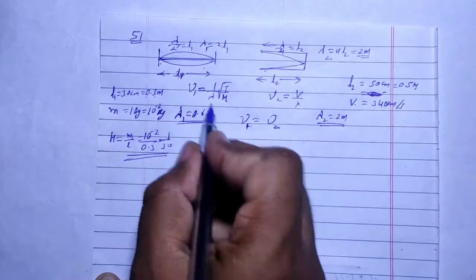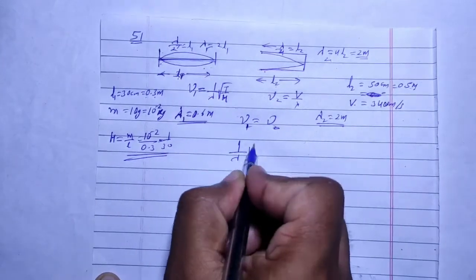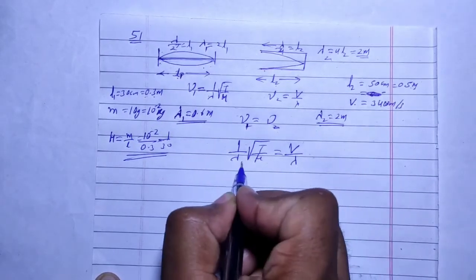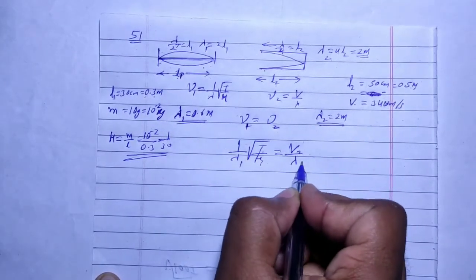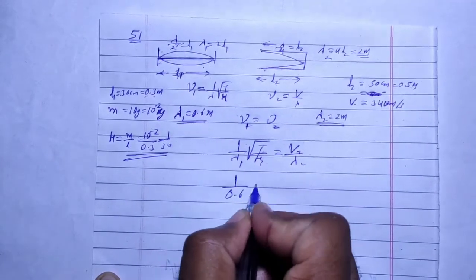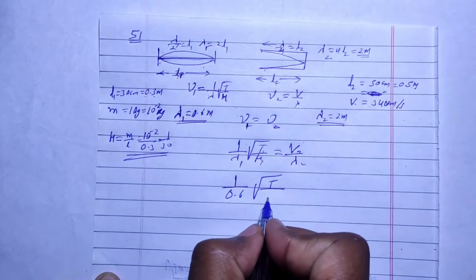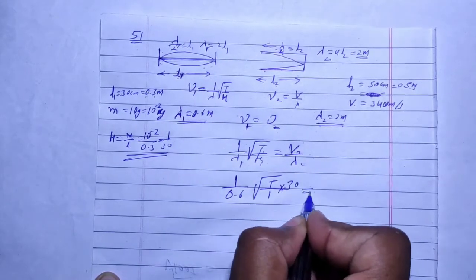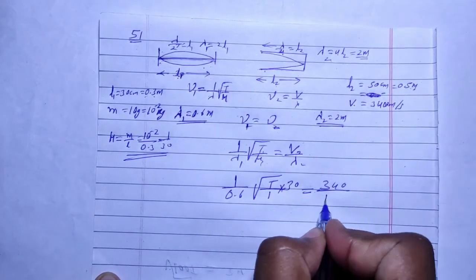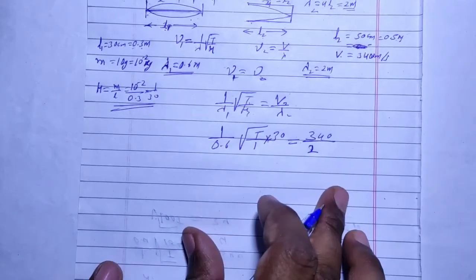Frequency nu equals v by lambda, which equals root T by mu times 1 by lambda. For the wire, 1 by lambda is 1 by 0.6. We need to find tension T. Mass per unit length is 1 by 30. This equals v2, where speed is 340, and lambda here is 2.